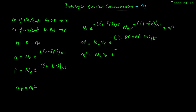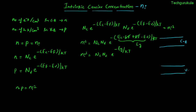EC minus EV is the forbidden energy gap EG. To illustrate: in the energy band diagram, the upper band is the conduction band and the lower band is the valence band. The top edge of the valence band is EV, the bottom edge of the conduction band is EC, and the difference EC minus EV is defined as the forbidden energy gap EG. So Ni squared equals Nc times Nv times e^(-EG/KT). Taking the square root, Ni equals the square root of Nc·Nv times e^(-EG / 2KT).